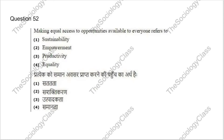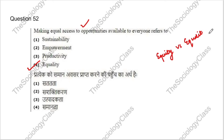Question 52: Making equal access to opportunities available to everyone refers to what? Options: sustainability, empowerment, productivity, or equality. The correct answer is option 4 — equality. As homework, search for equity versus equality — these two concepts are distinct. Tell me in the comments what is equity and what is equality.